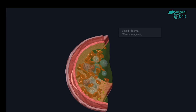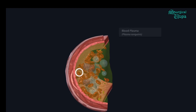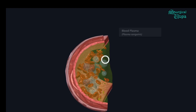It also contains ions such as sodium, potassium, calcium, chloride, and magnesium ions. The function of plasma is that it suspends the formed elements — that is, leukocytes, erythrocytes, and platelets — within itself, and it also acts as a buffer between the cell and the external environment.